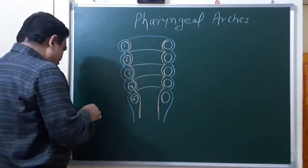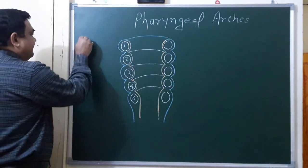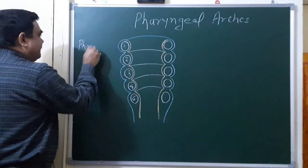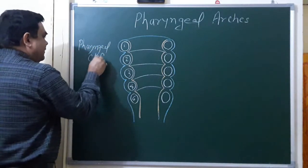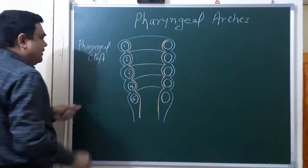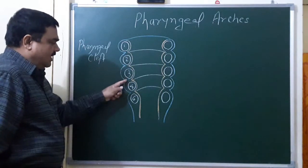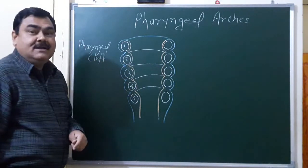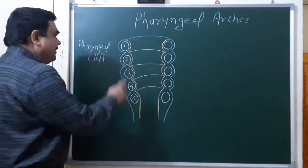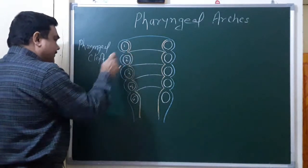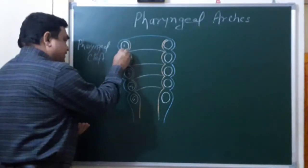These grooves between adjacent arches are known as pharyngeal clefts. There are four pharyngeal clefts: first, second, third, and fourth. The first pharyngeal cleft forms the external acoustic meatus, providing the epithelial lining of the external acoustic meatus.